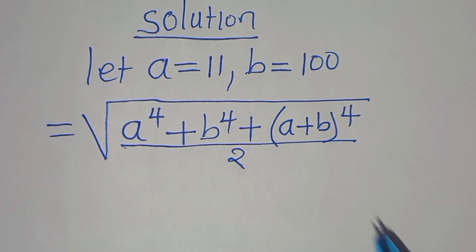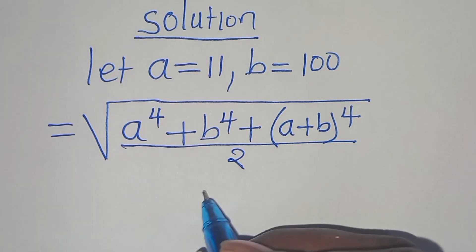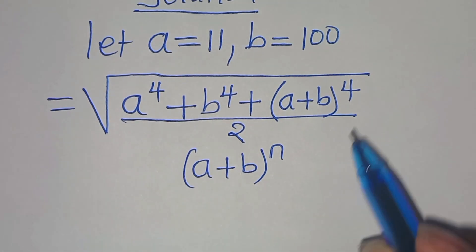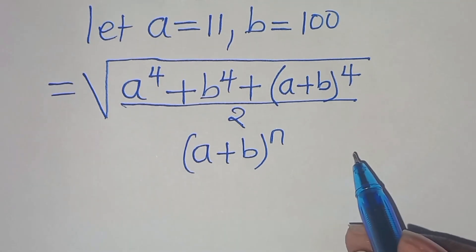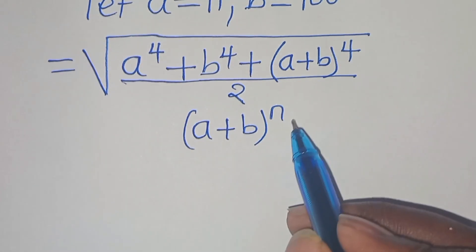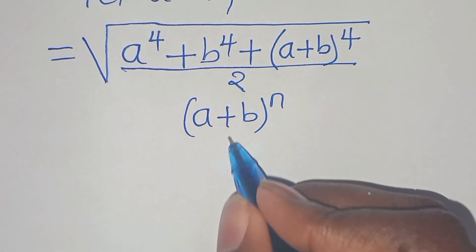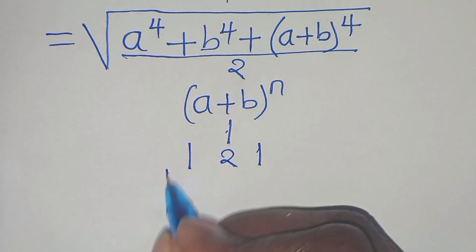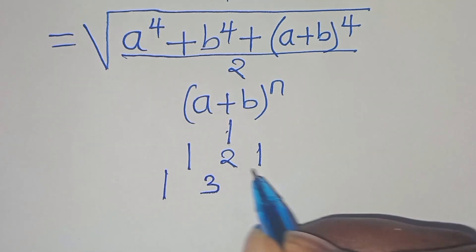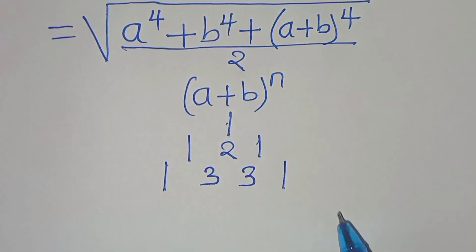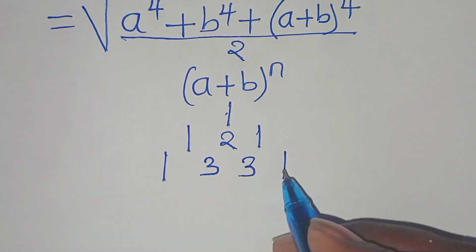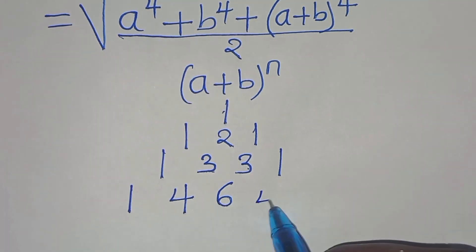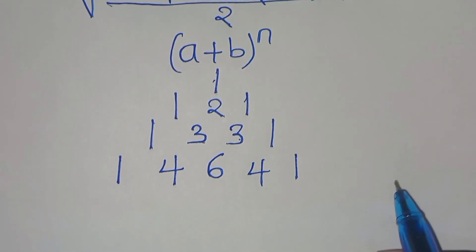The next step: we have a plus b raised to the power of 4, which is in the form of a plus b raised to the power of n. To expand this, we can use the binomial expansion. For n equal to 2, the coefficients are 1, 2, 1. When n equal to 3, we have 1, 3, 3, 1. When n is equal to 4, like in our case, we have 1, 4, 6, 4, 1. These are the coefficients.